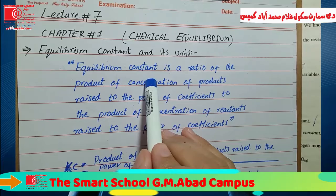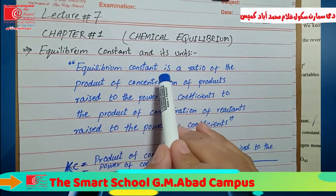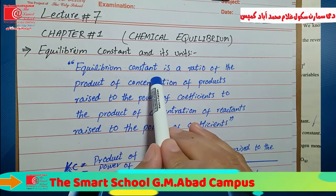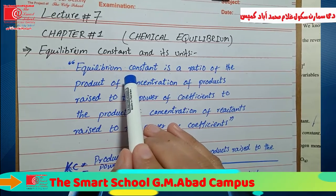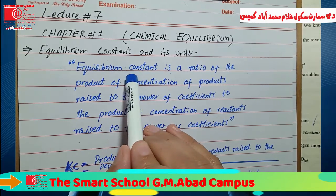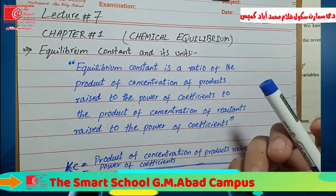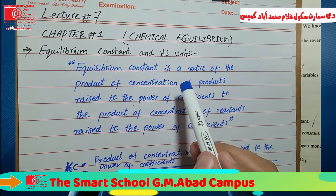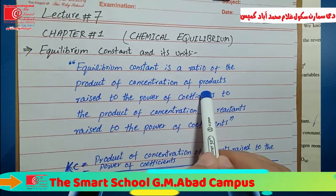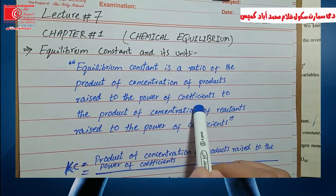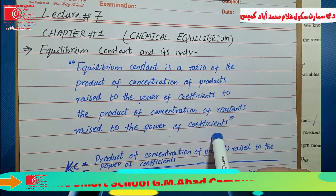Let's look at the equilibrium constant. The equilibrium constant is a numerical value obtained when a reaction reaches equilibrium. The definition is: equilibrium constant is the ratio of the product of concentration of products raised to the power of their coefficients, to the product of concentration of reactants raised to the power of their coefficients.